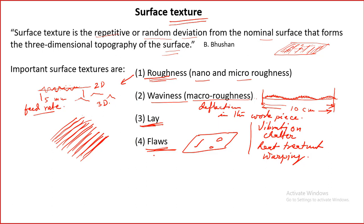Texture is a combination of many things together. For any particular application, we may not have to measure all of them — sometimes we measure roughness, sometimes we focus on waviness, lay, or flaws. It depends on the application. But they will all have influence on tribological performance.